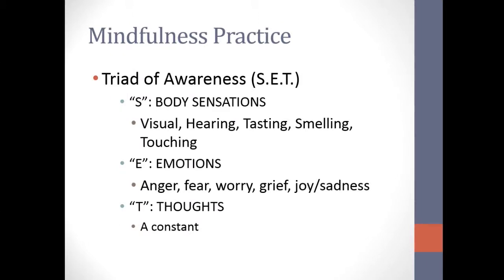Our mindfulness practice is based on this triad of awareness — S-E-T. S is for physical or body sensations: what you're seeing, hearing, tasting, smelling, and touching. E is for emotions — there are five main categories: anger, fear, worry, grief, and joy and sadness. T is for thoughts; everyone has them, and they're a constant in your life. Through all the formal practices we're going to review today, we will all come back to this triad of awareness, constantly checking back in to our sensations, emotions, and thoughts, bringing us back to live in the present moment in order to be more mindful and reduce stress.